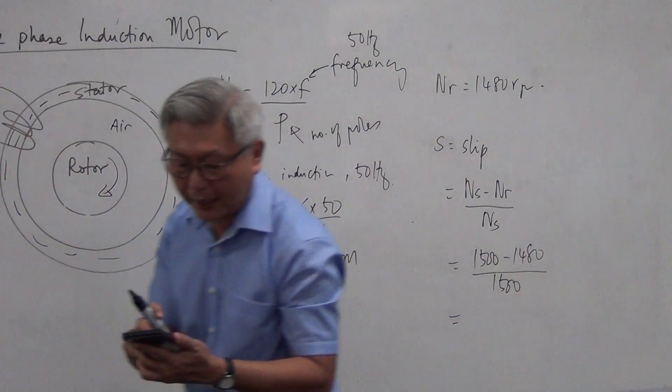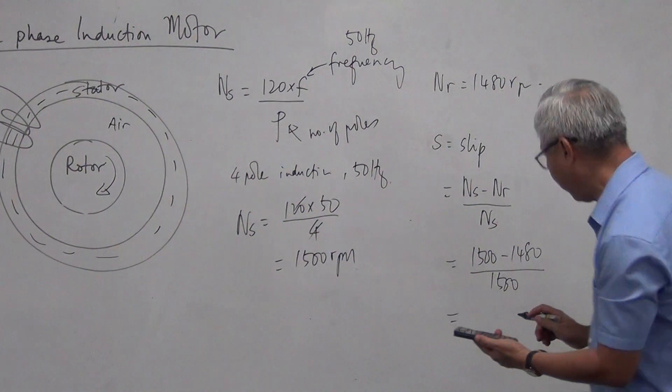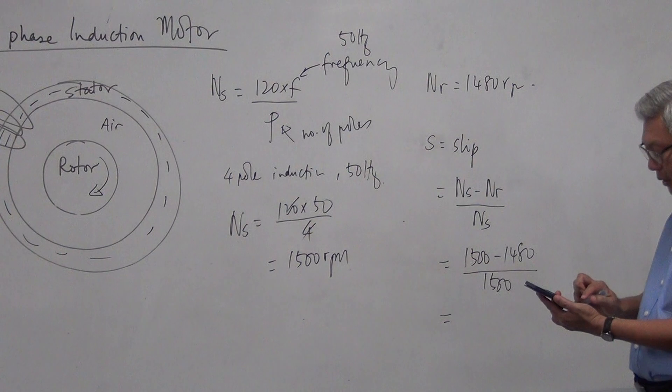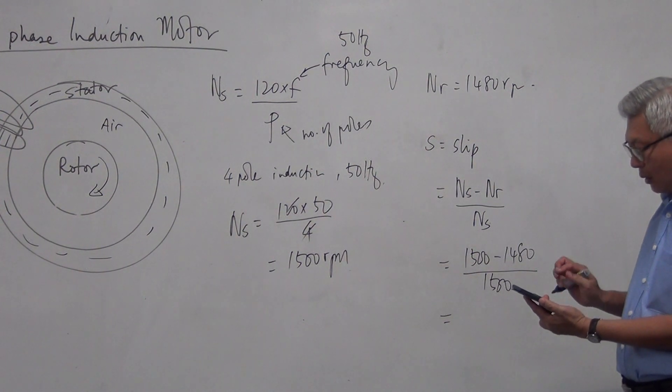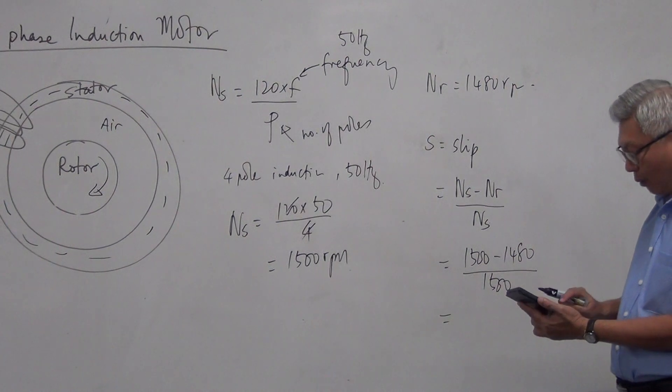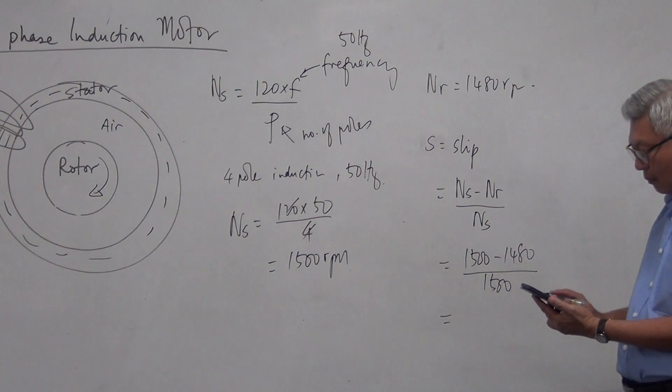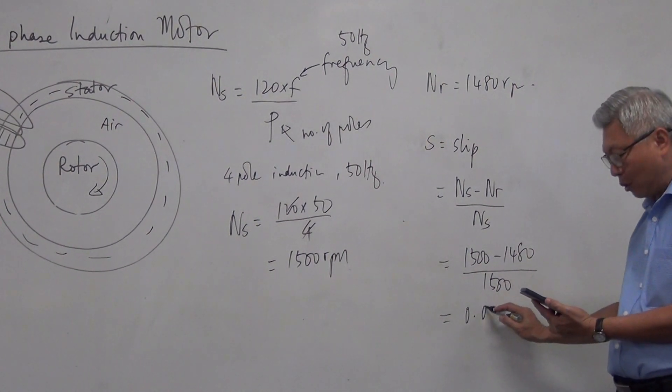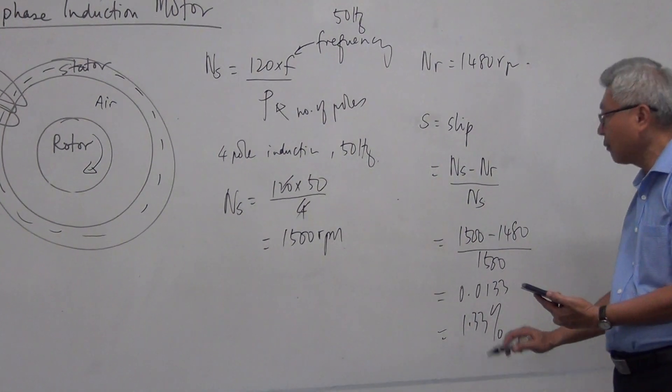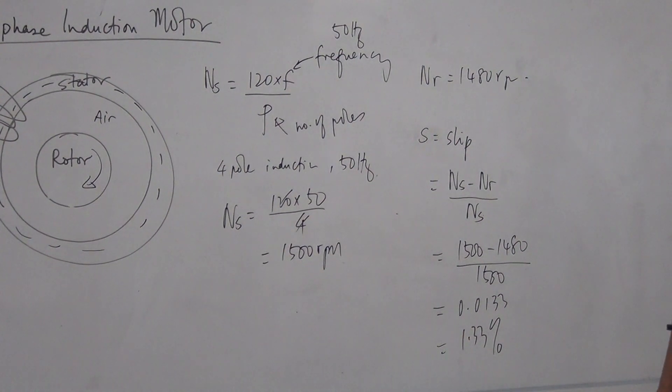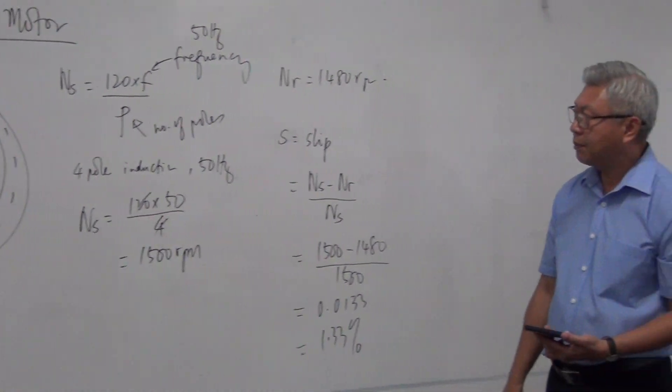We could express it in terms of percentage or decimal number. So 1500 minus 1480 divided by 1500, so that is 0.0133 or that is equal to 1.33%.